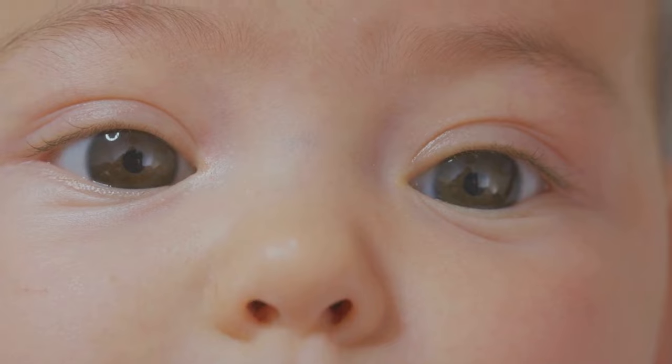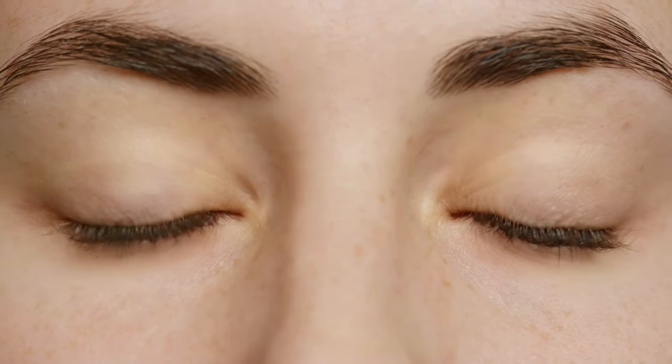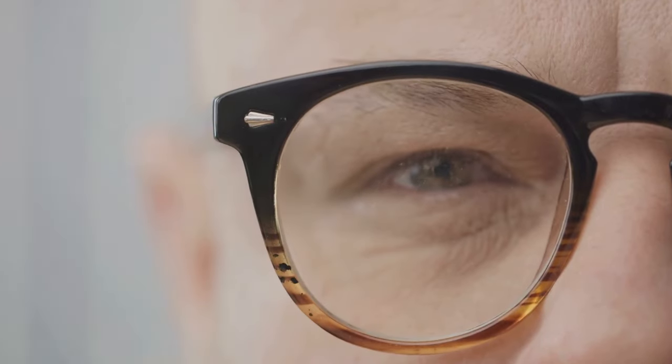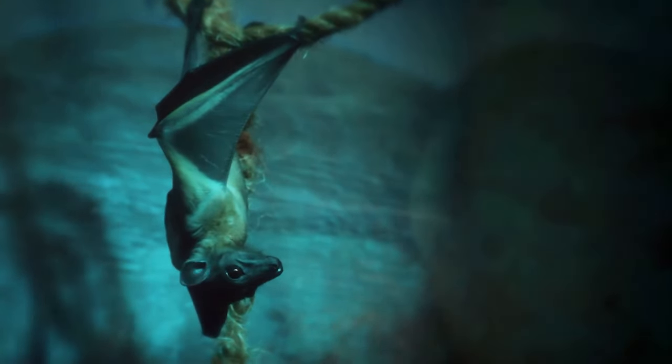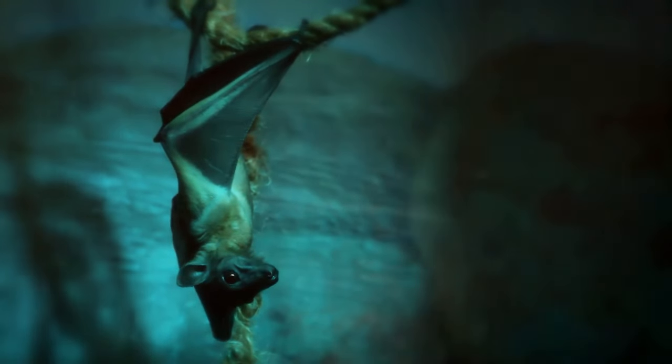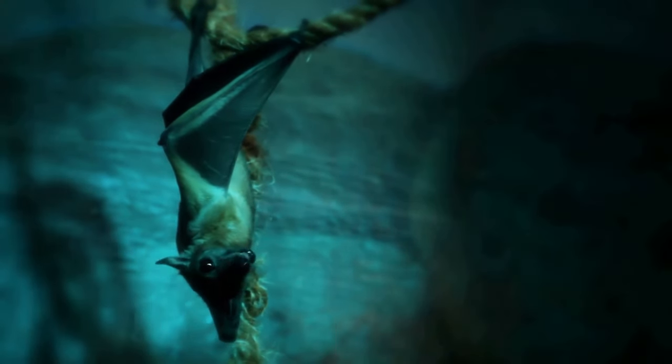Ever wonder why a baby's eyes are so big? Well, that's because your eyes remain the same size from birth, even until death. Or that we blink more than 25,000 times a day. We'll even delve into the seemingly impossible, like the fact that our eyes actually see everything upside down. The human eye is a realm of wonder and surprises, and we're just about to scratch the surface.